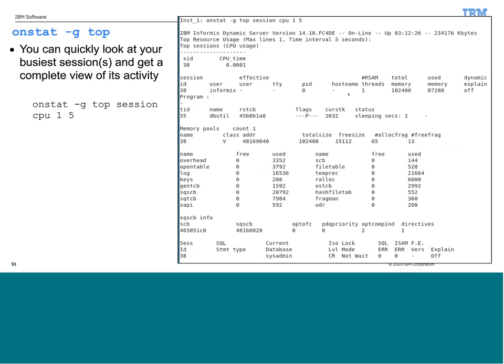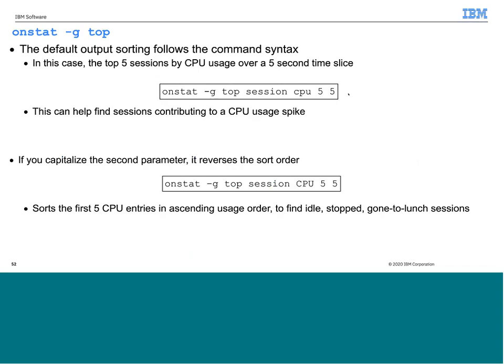If you want to look at CPU utilization for a session, you can use the CPU flag and it will give you your top CPU user. 'Top session CPU 5 5' will give you the five highest CPU usage sessions over a five second window. But if you capitalize the second parameter — so CPU is capitalized — you're now going to get ascending order, meaning you'll find your first five idle, dead, or stopped sessions. So you have options on how you get the output.